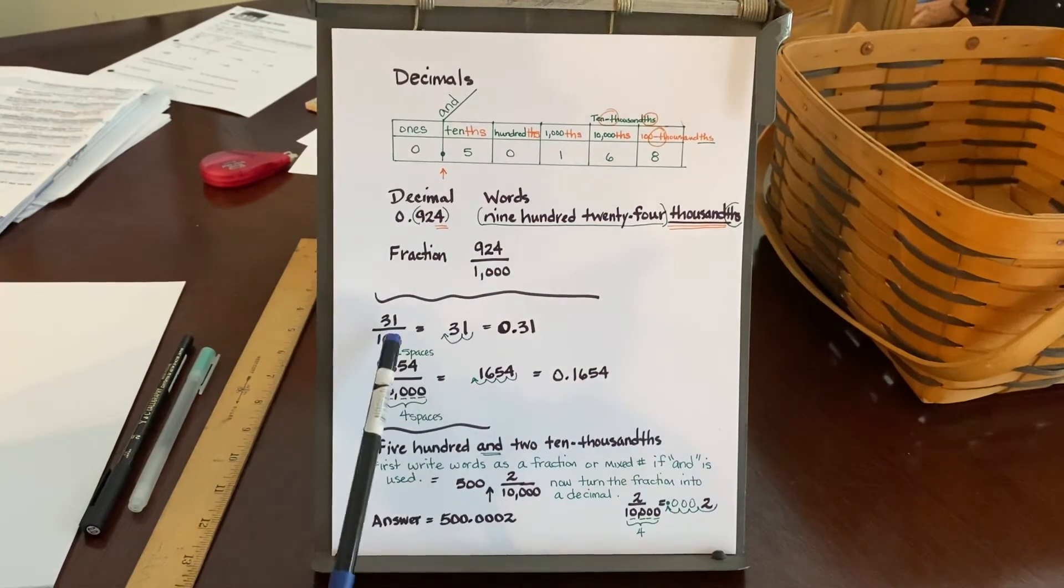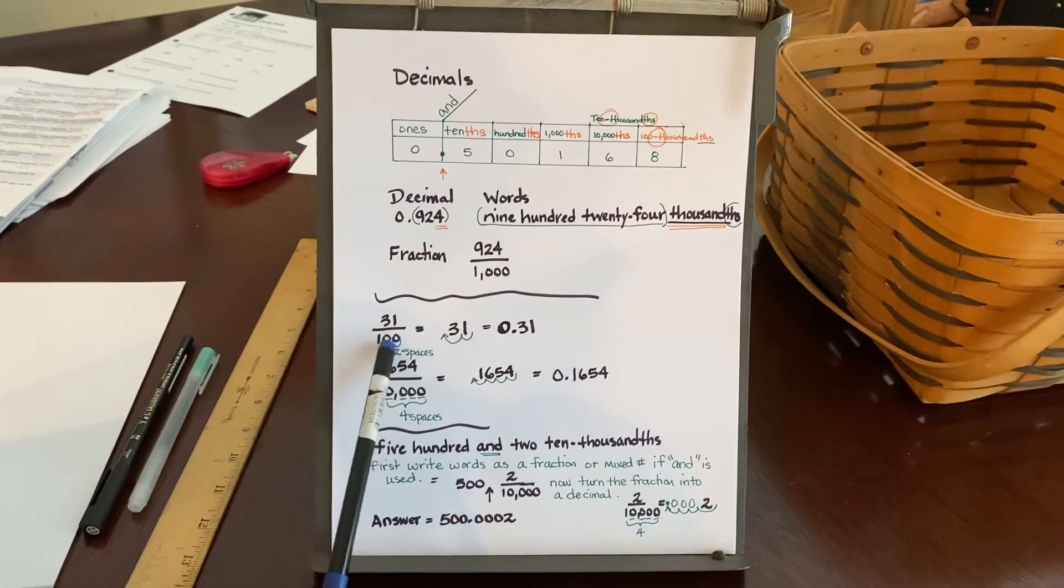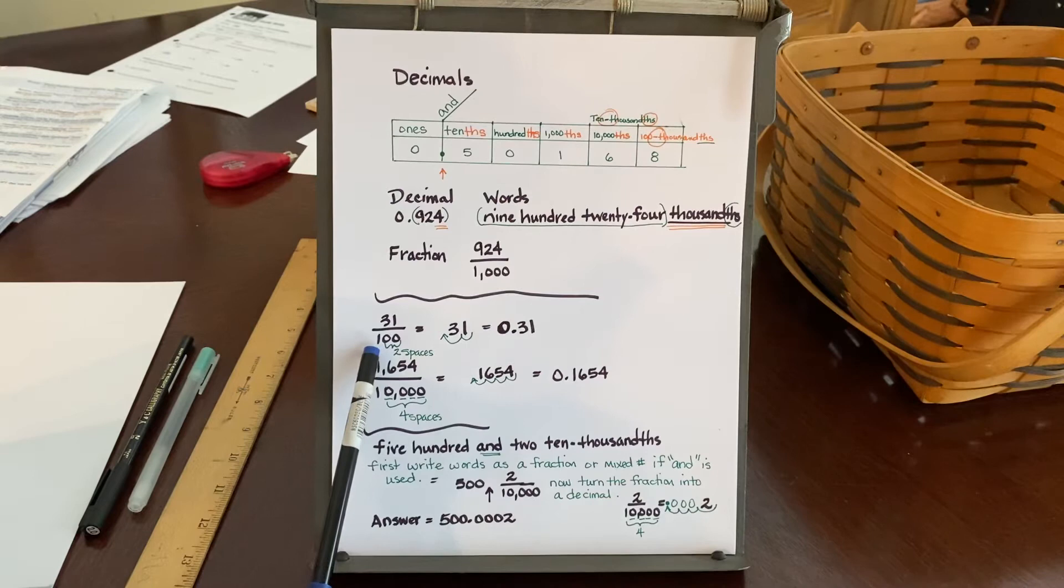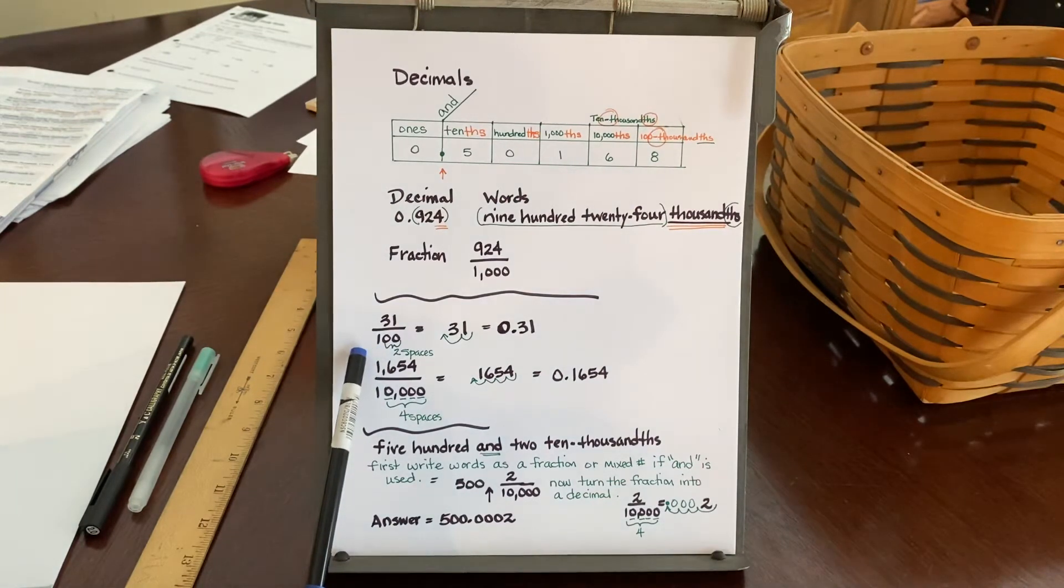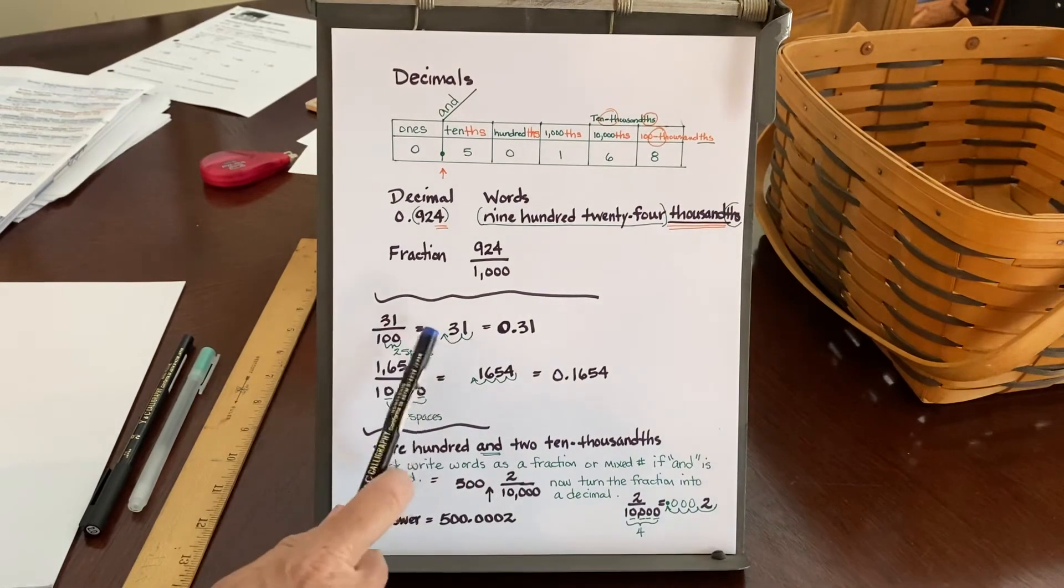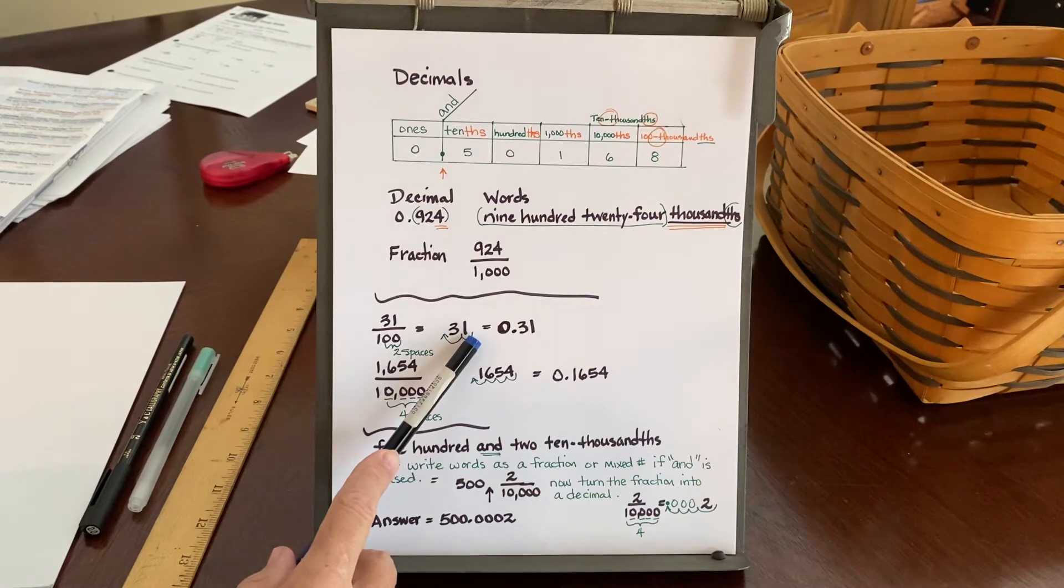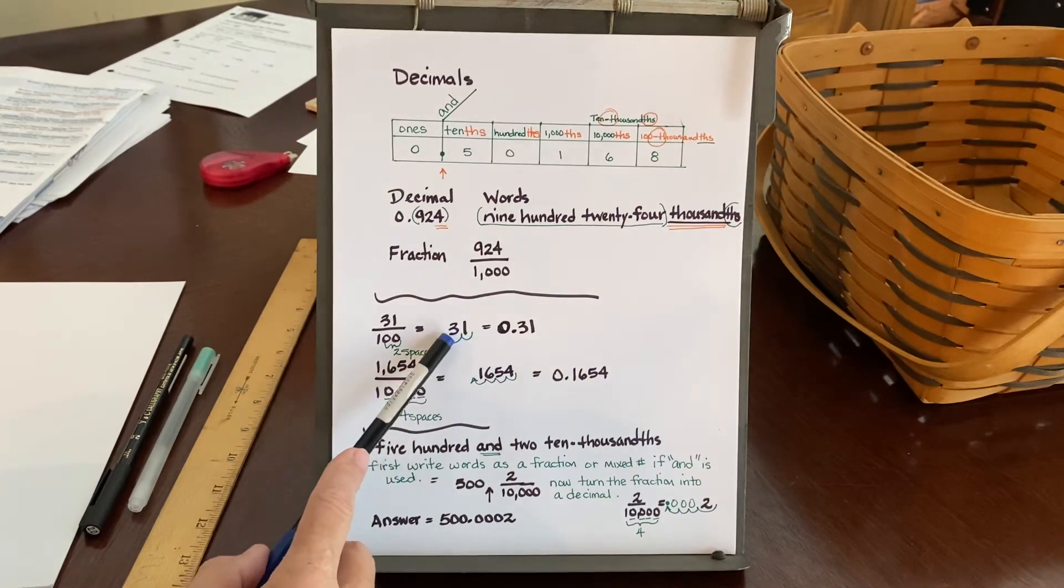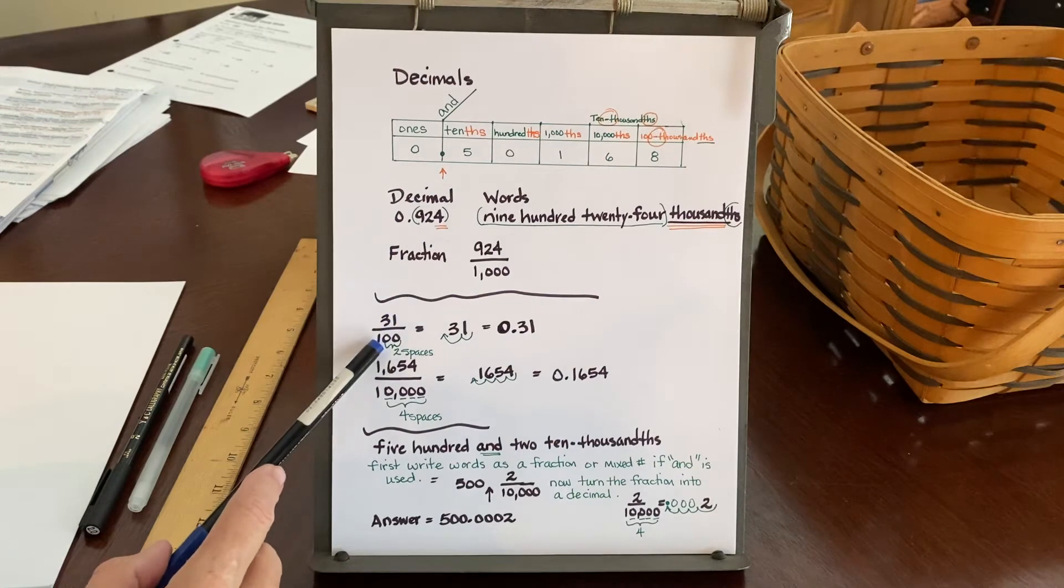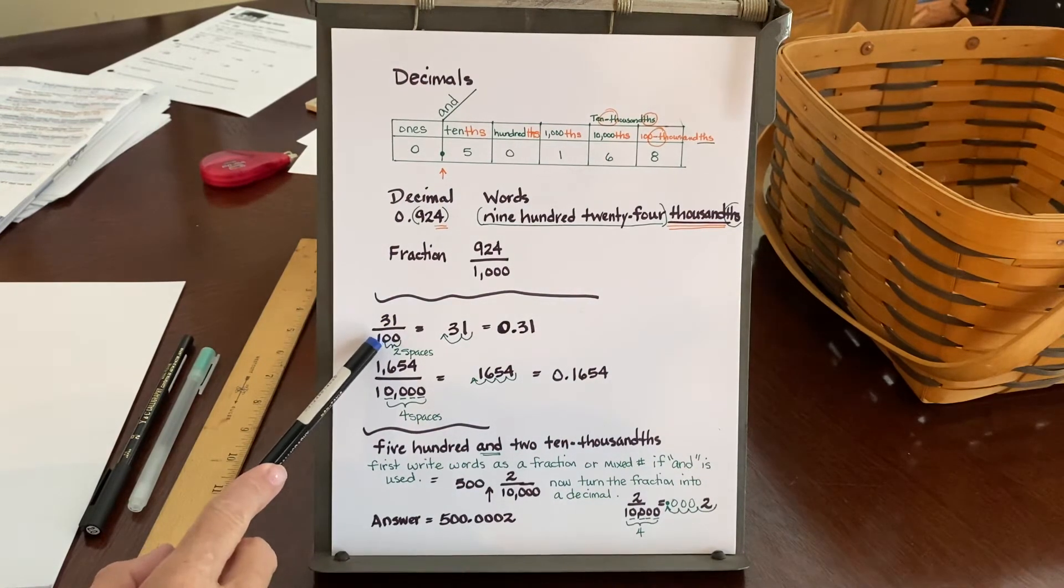So now, because I had two zeros in the denominator, two zeros in that number 100, that is telling me how many decimal places I need to mark off. Well, I told you when you don't see it that the decimal is always behind the number. So in this whole number 31, there is an imaginary decimal sitting behind the one, to the right of the one. So I need to mark off two places to the left to account for the two zeros in this number to the fraction, 31 over 100.